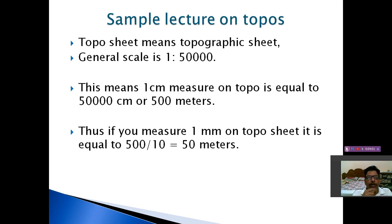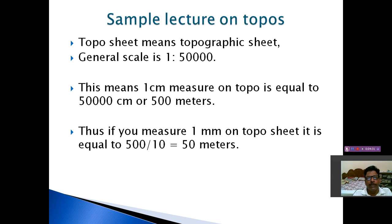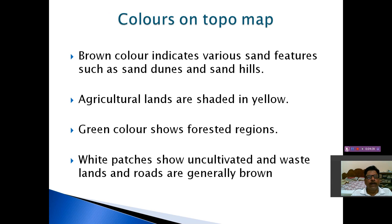I am saying this a little fast — in the actual class, this entire topic takes 1 hour. Here, I need to explain the importance within 5 to 10 minutes. 1 is to 50,000 means if you measure 1 centimeter on the drawing, it is equal to 50,000 centimeters — that is 500 meters. So 1 centimeter is 500 meters, and 1 millimeter is 50 meters. There are also color codes: brown color is for various sands and dunes, agricultural lands are given yellow, green color is given for forest regions, white patches for barren or uncultivated lands.